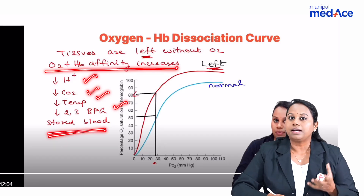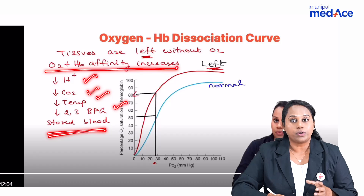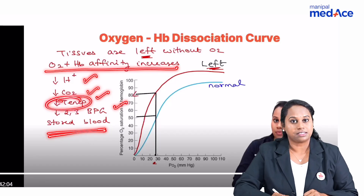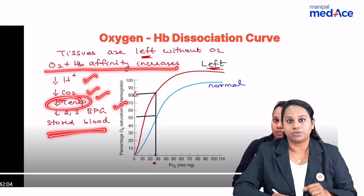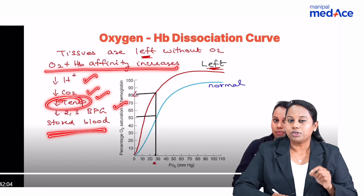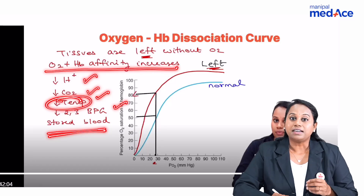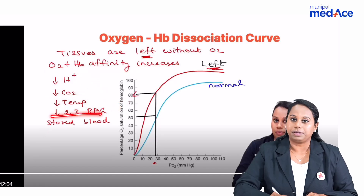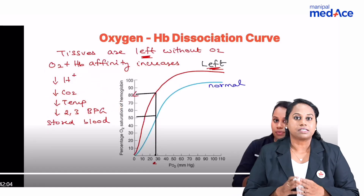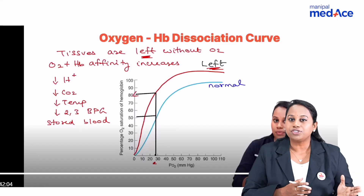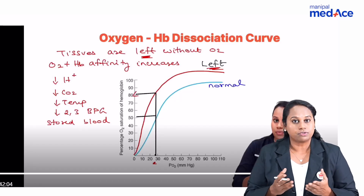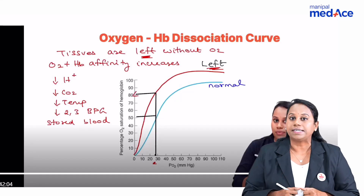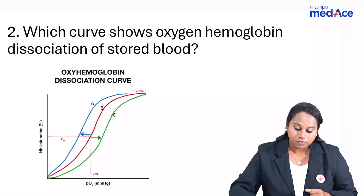When you store blood in blood banks, blood is stored at low temperatures — a decrease in temperature. Also, agents added to preserve blood can decrease 2,3-BPG levels. So stored blood causes a left shift of the curve either because of low temperature or decrease in 2,3-BPG levels.